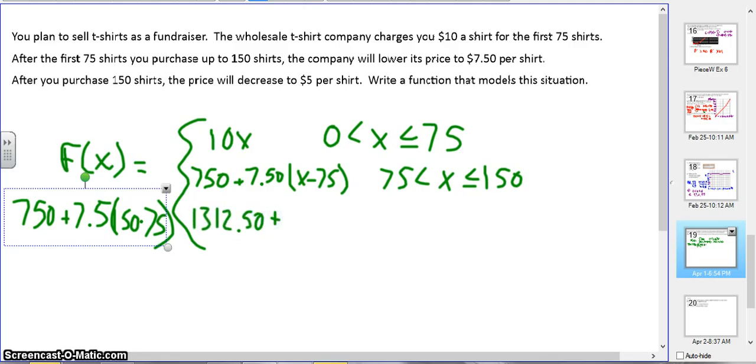And then beyond that, it's $5 a shirt. But I've got to subtract out the 150 shirts I already bought. So that's for anything greater than 150 shirts. So that's what my equation should look like.